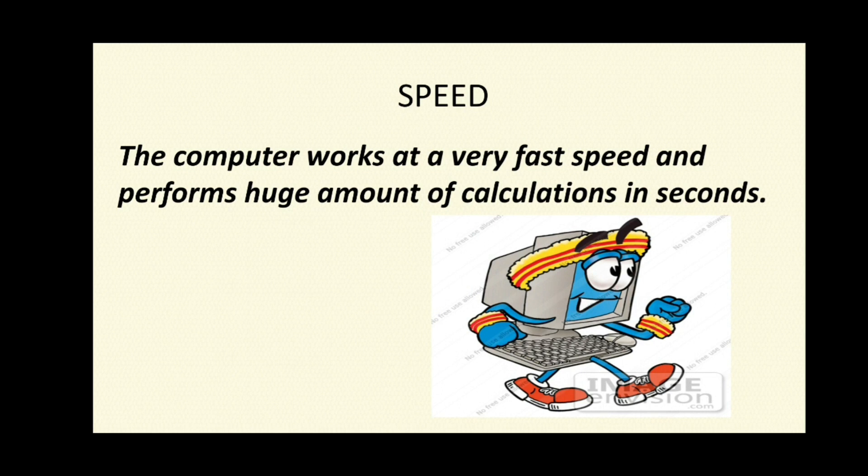The very first one is speed. The computer works at a very fast speed and performs huge amounts of calculations in seconds. Computer is a machine which can perform billions of calculations in a second. Speed is its most important characteristic that enables users to perform multiple tasks quickly and simultaneously.